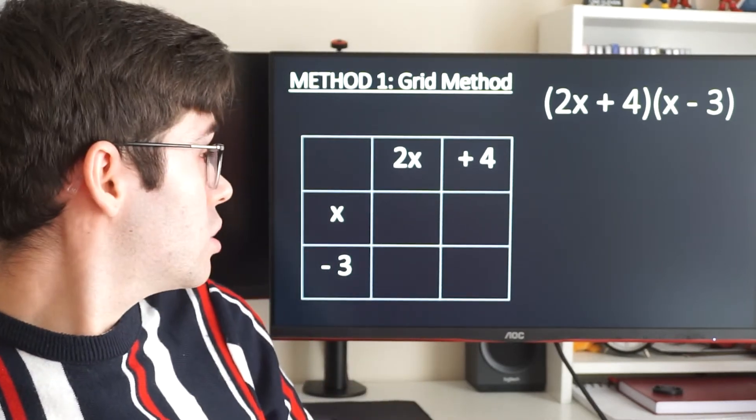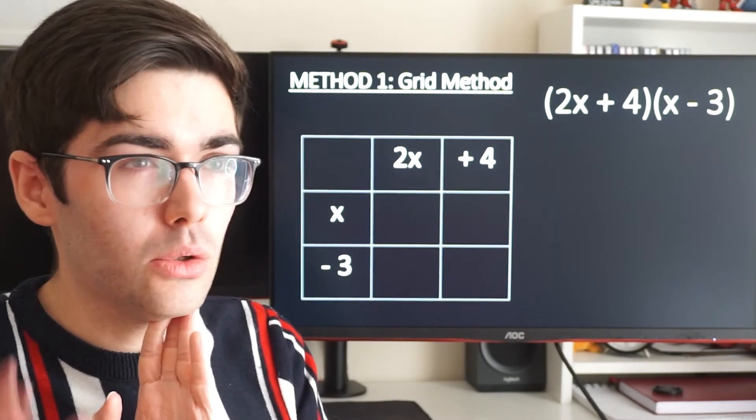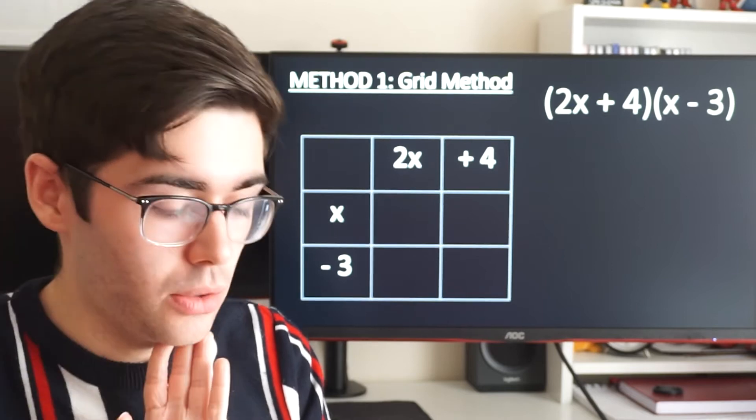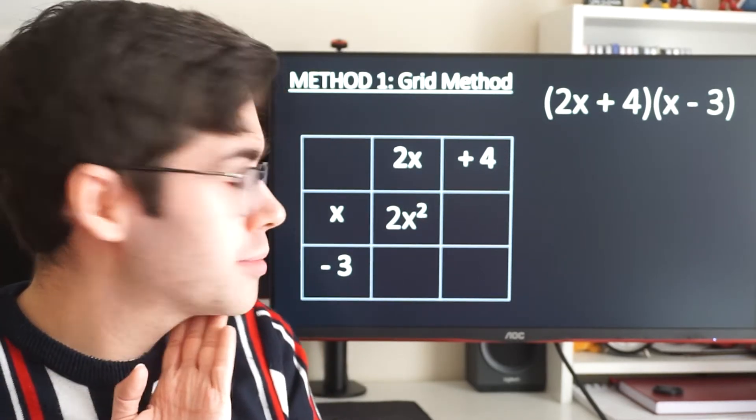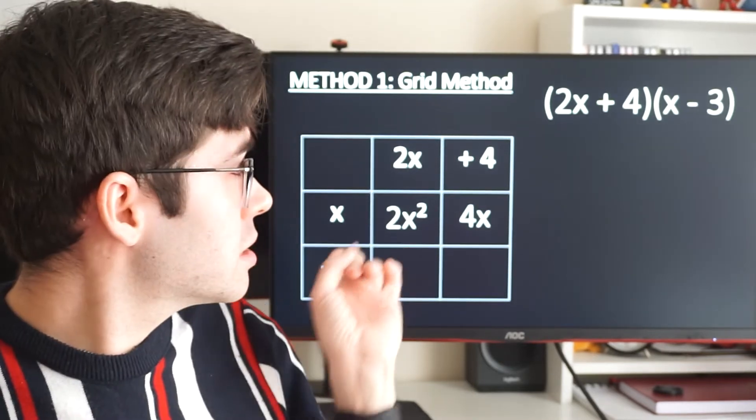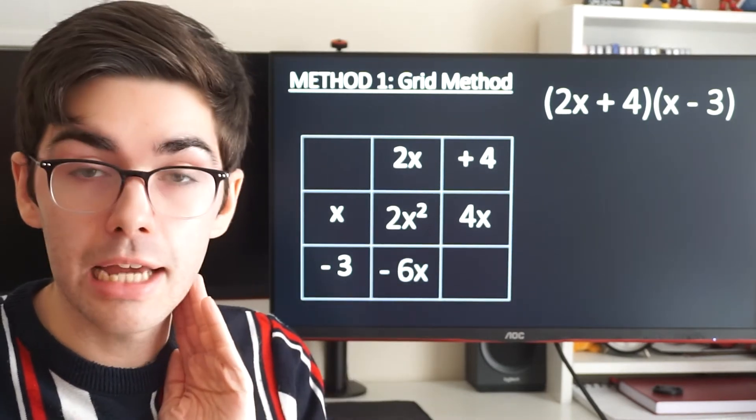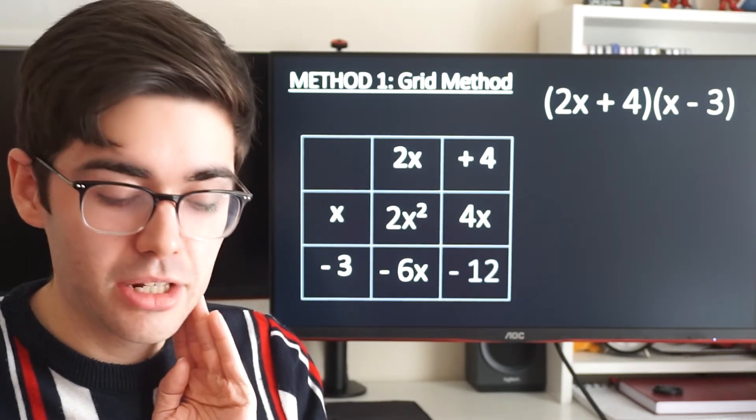And we're just going to times into the grid there. So 2x times x gives me what? So that's already 2 times x times x. So we've got 2 x's there and a 2. It is 2x squared. x times positive 4, 4x. 2x times minus 3. What's 2 times minus 3? Minus 6. So it's just minus 6x. And then 4 times minus 3, minus 12.